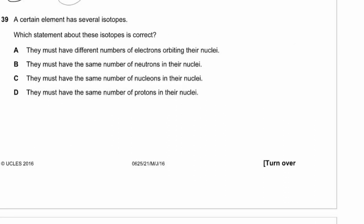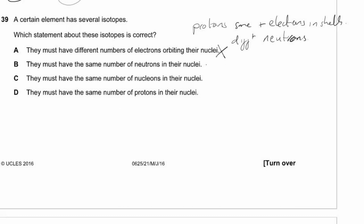Question 39. A certain element has several isotopes. Isotopes have the same number of protons, different numbers of neutrons, and (unless ionised) the same number of electrons. Option A (must have different electrons) — not necessarily true. Option B (same neutrons) — opposite of truth. Option C (same nucleons) — false, different neutrons give different nucleons. Option D (same number of protons) — correct. Answer D.